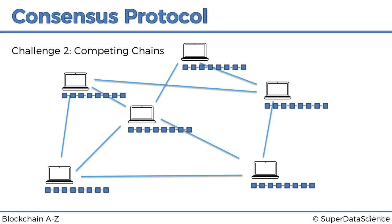The second challenge is the problem of competing chains. In a large blockchain distributed across the world, there can be a lag between nodes, especially those far away from each other. It could happen that two nodes far apart successfully mine a block at the same time. There's nothing malicious about this — once one node mines a block, before that information reaches the other node, that second node may have already mined a block too. From the perspective of each node, they've done nothing wrong.